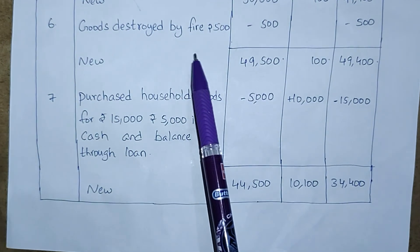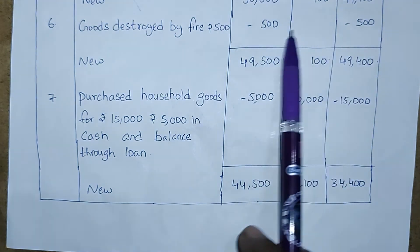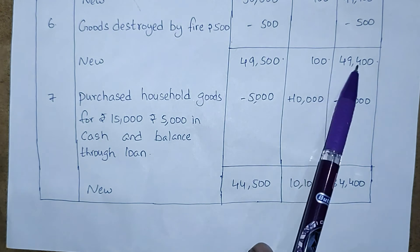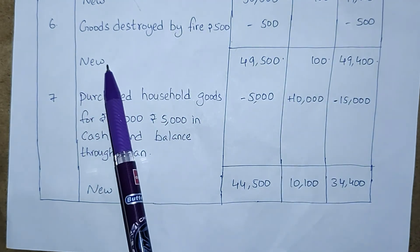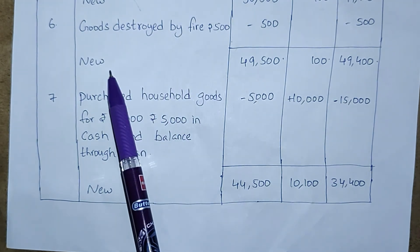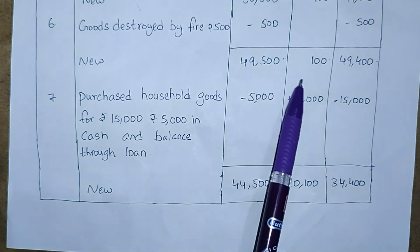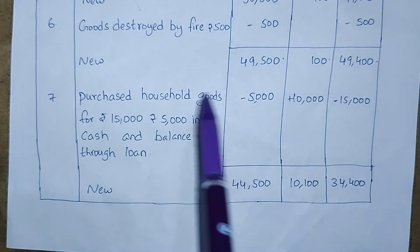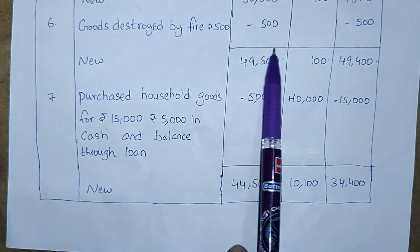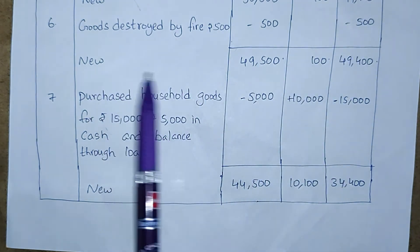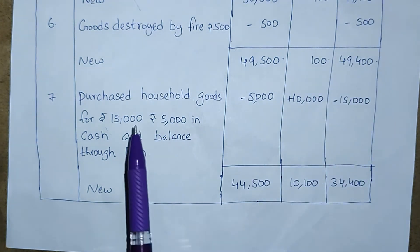Next, goods destroyed by fire — Rs. 500. So minus 500 from assets and minus 500 from capital. New accounting equation: Assets = 49,500, Liabilities = 100, Capital = 49,400. Each and every change in the transaction, write a new accounting equation like that.